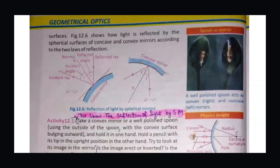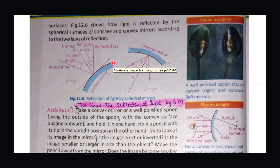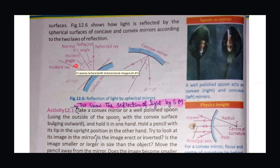Reflection of light by spherical mirrors follows the same laws as plain surfaces. The first law is that all rays — incident, reflected, and normal — lie in the same plane. In the case of spherical reflecting surfaces, the same law applies exactly. The second law is that the angle of incidence is equal to the angle of reflection, which also holds for curved surfaces just like for a plane mirror.